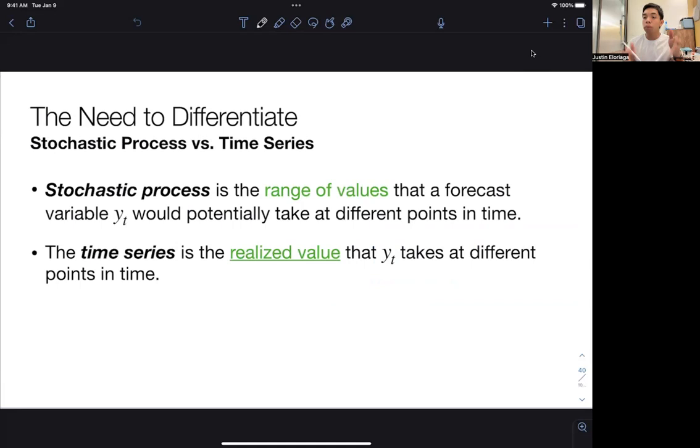The key thing here is, in time series econometrics, we care about both the time series itself and something which we call the stochastic process. And in building up our models, we actually consider more often than not the stochastic process first. So what is this stochastic process? Well, the stochastic process is the range of values that a forecast variable, say Yt or any variable, would potentially take at different points in time. The key thing here is would potentially take, and this range of values.